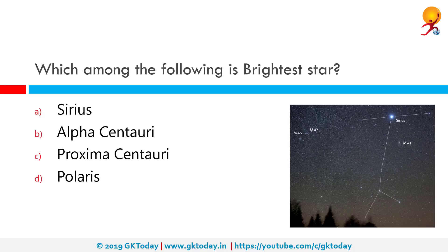The brightest star in the sky is Sirius, also known as the dog star, or more officially Alpha Canis Majoris, for its position in the constellation Canis Majoris. Sirius is a binary star dominated by a luminous main sequence star, Sirius A.